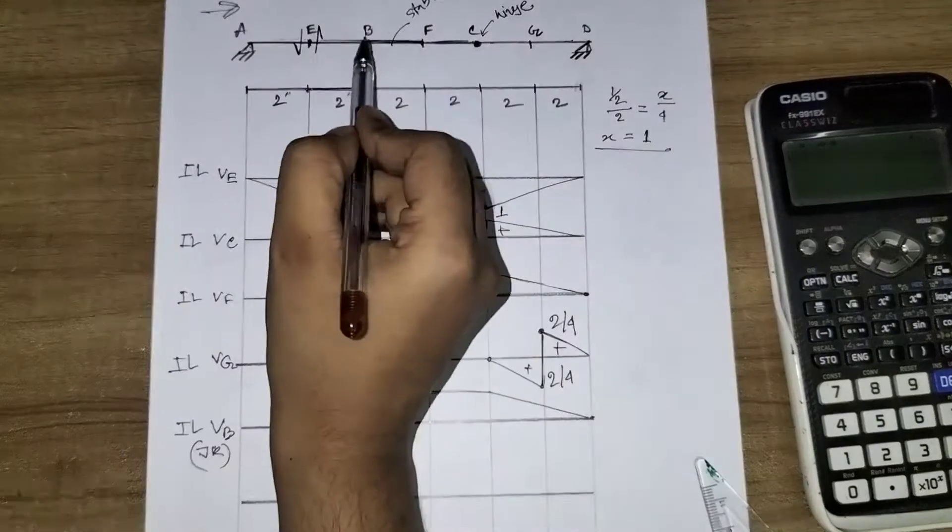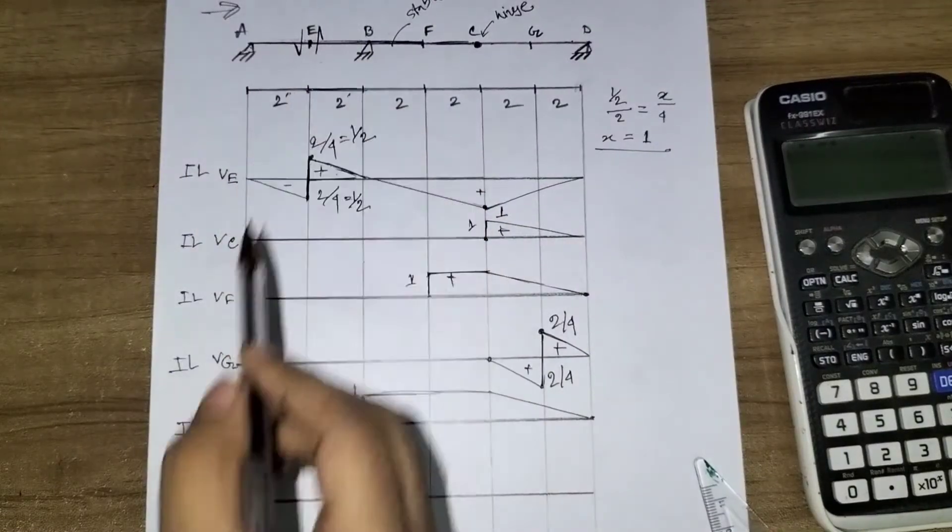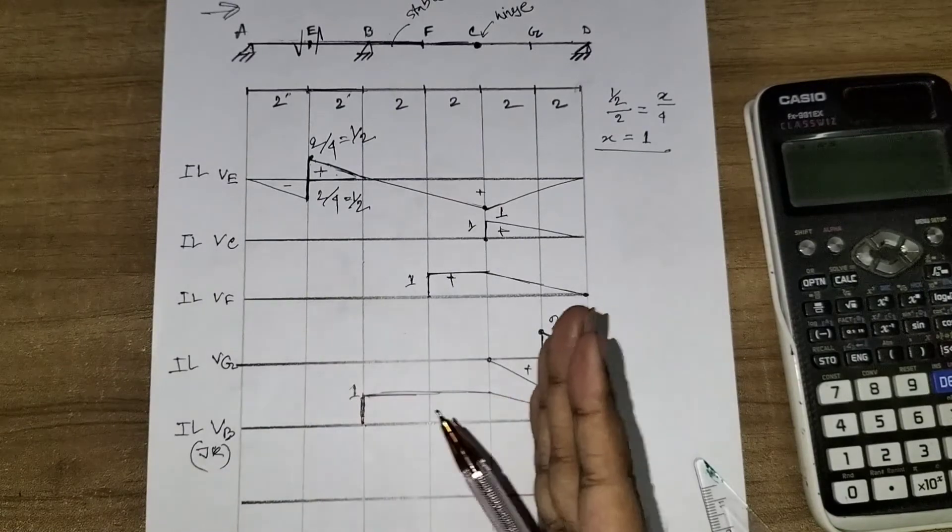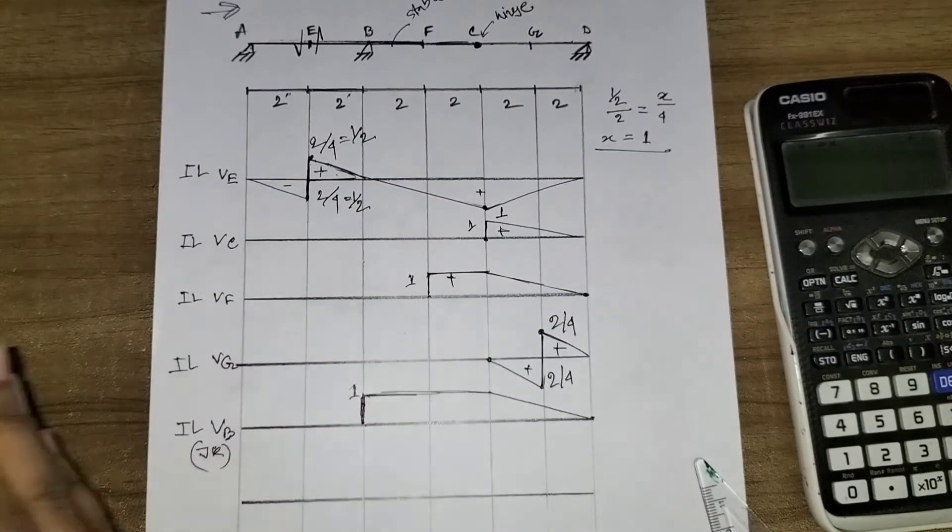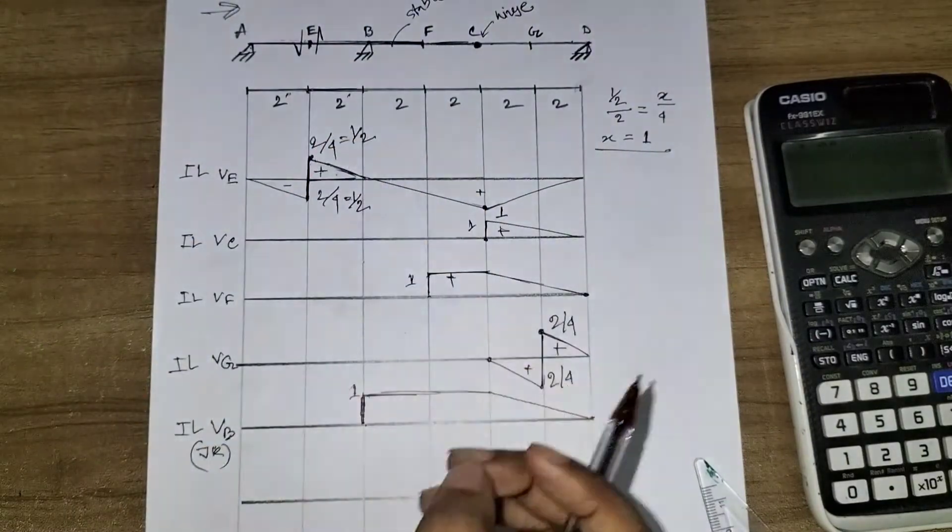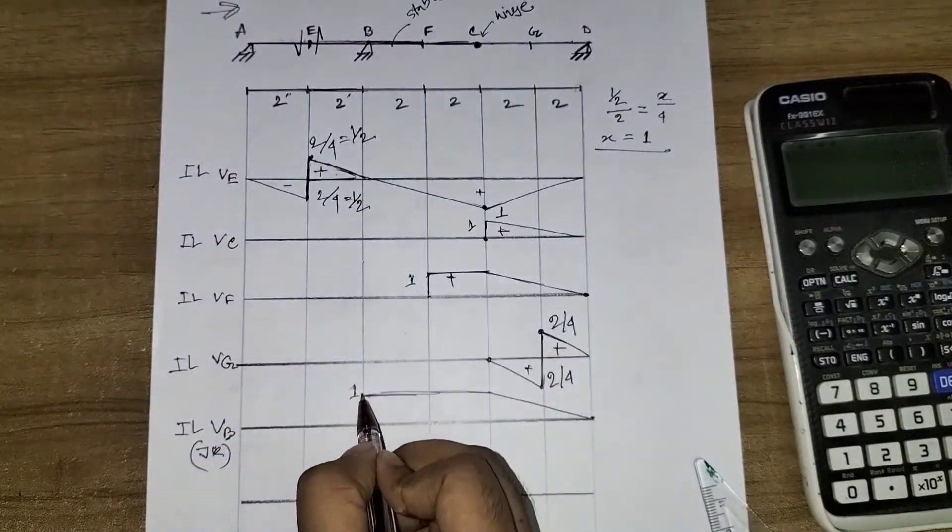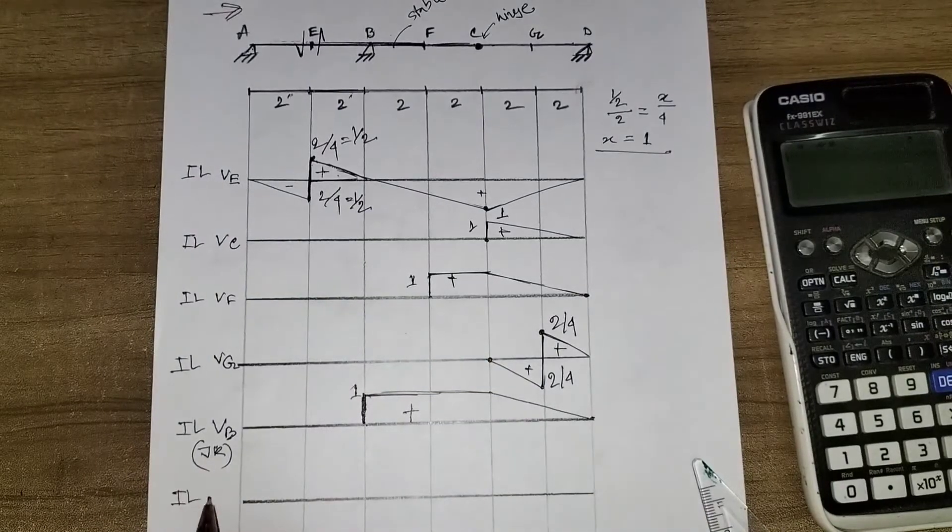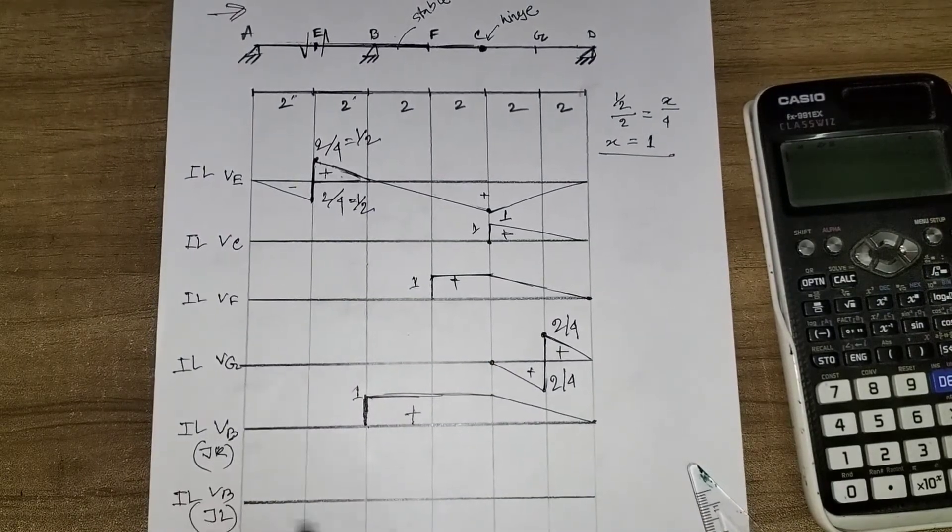The support goes back. Because A to C portion is completely stable, the A to C portion will be blank. It just goes upward one unit. Then for VB, on the left side,